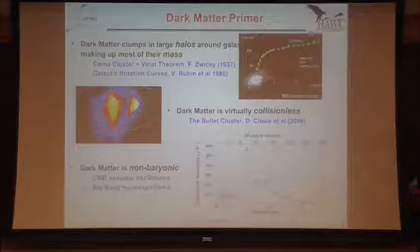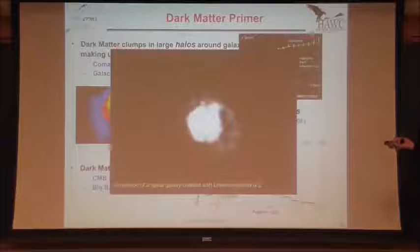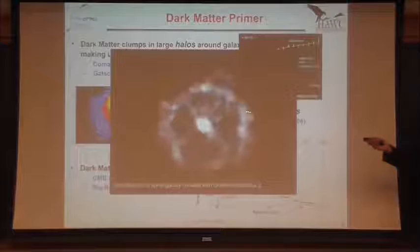Whenever I give outreach talks, I say that dark matter is the gravitational glue that holds galaxies together. It's actually this game called Universe Sandbox 2 where I took a spiral galaxy and removed the dark matter, and that's what happened. So if there was no dark matter in the Milky Way, our galaxy would literally fall apart, except for this teeny tiny little core in the middle.